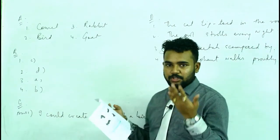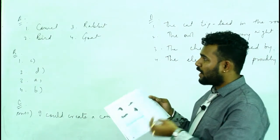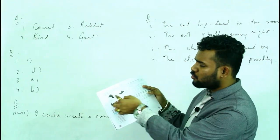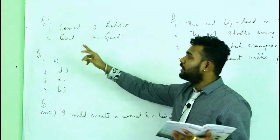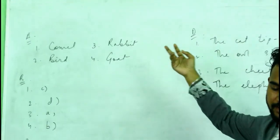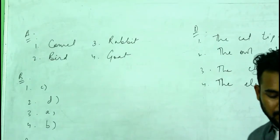So I have written it. If you think it is something else you can do it. So I thought that it is camel, the first one. Next one is bird. Third one is a rabbit and fourth one is a goat. Clear? If you think it is anything else you can always do it.